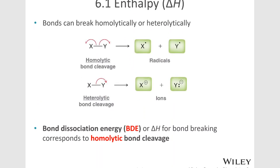Bonds can be broken homolytically or heterolytically. We can break a bond where each of the electrons goes back to the atom that it came from. When a bond is formed, theoretically each atom has donated an electron to that bond — there are two electrons in a bond. So we can break a bond homolytically, where each of the electrons goes back to the atom from which it came. Those atoms are called radicals — each atom has only one electron, an odd electron, forming a free radical.